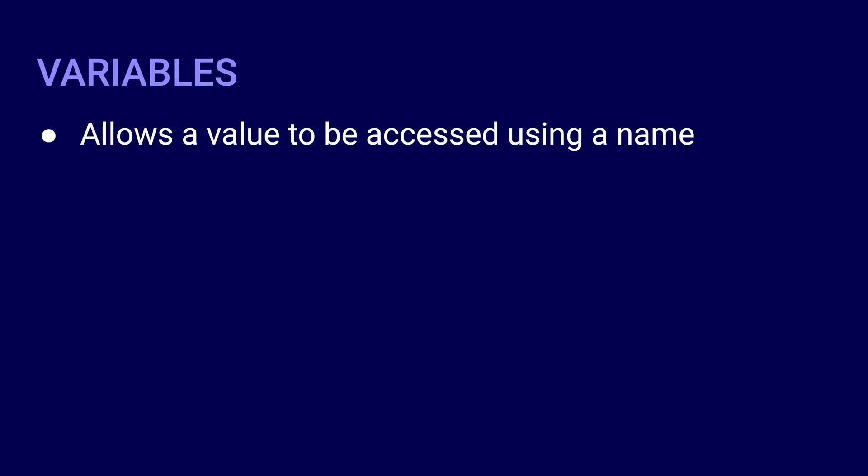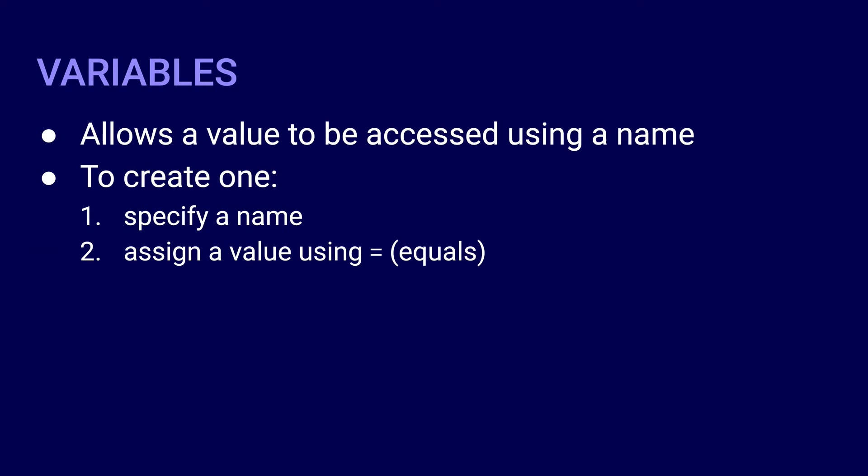In programming, a variable is a tool that allows a programmer to access a value using a name. To create a variable, specify a name, and then assign a value to it using the equals sign.